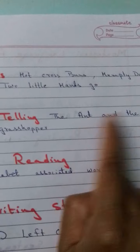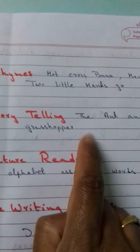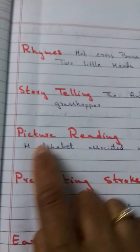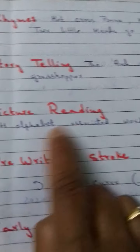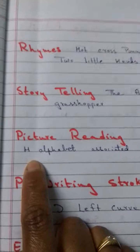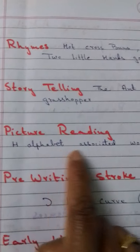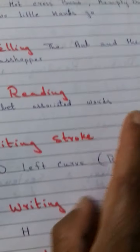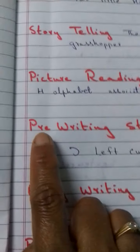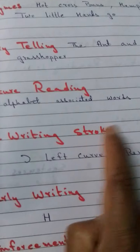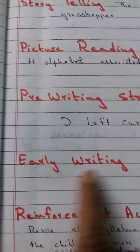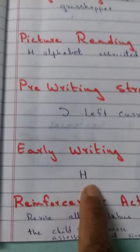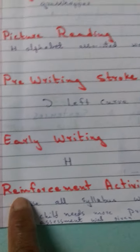Storytelling: The Ant and the Grasshopper. Picture reading is H. Alphabet associated words. Prewriting flow — left flow revision. Early writing is H.